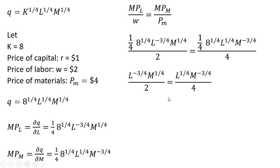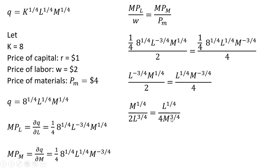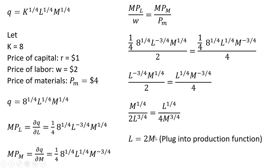This simplifies down to this. Following the rules of exponents, moving L to the minus three-fourths down into the denominator, we get this. Now I'm just going to do some multiplying here. Cross-multiplying L to the three-fourths by L to the one-fourth, we'll get L. Cross-multiplying M to the three-fourths times M to the one-fourth, we'll just get M. And then multiplying through by four, we get four divided by two on the left-hand side. So with all that said, this simplifies down very nicely to L equals 2M.